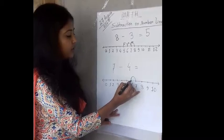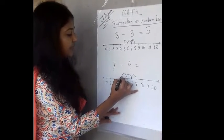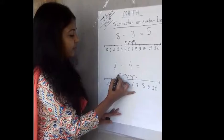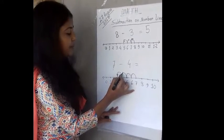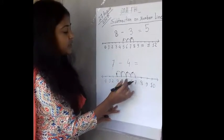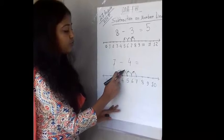So 1, 2, 3 and 4. So we came here. We just counted 1, 2, 3 and 4. We went backward 4.